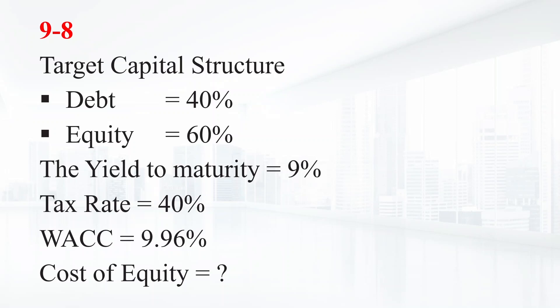The CFO has calculated the company's WACC as 9.96%. What is the company's cost of equity capital? We have weight of debt is 40%, weight of equity is 60%, cost of debt is 9%, tax rate is 40%, WACC is 9.96%, and we need to find the cost of equity.